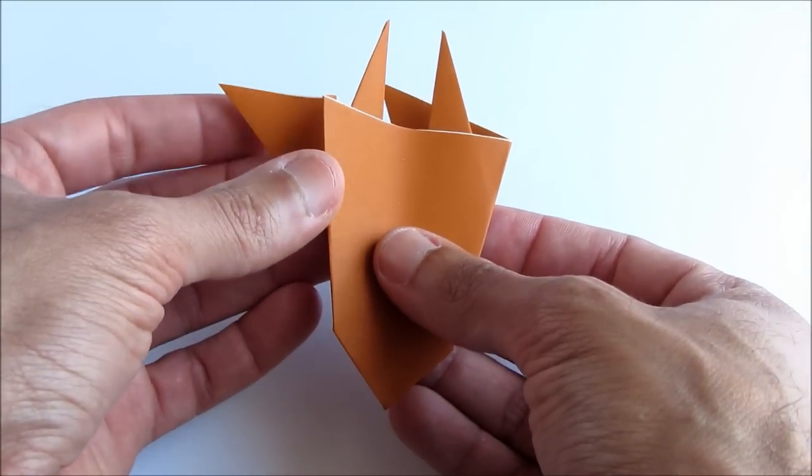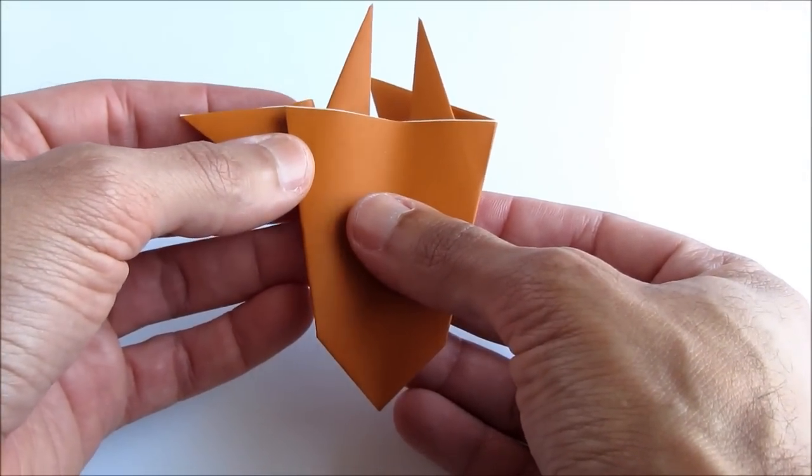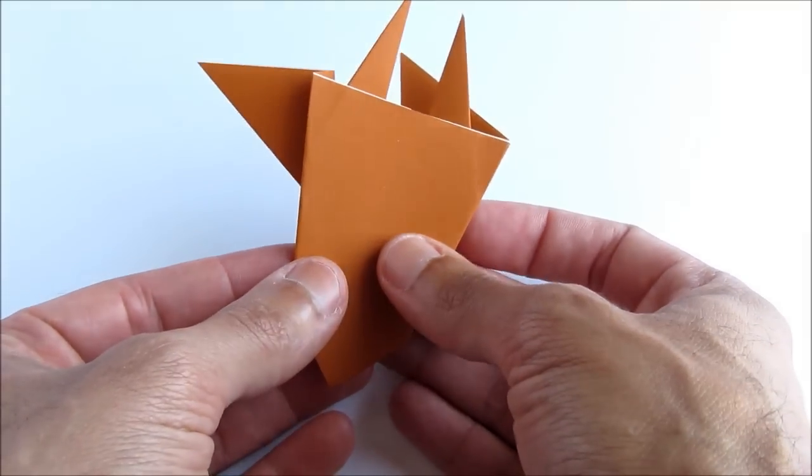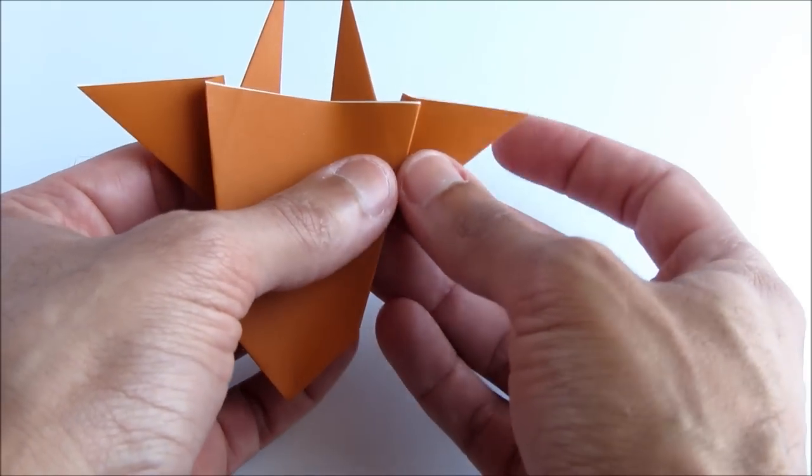Next do a valley fold to form the left ear of the bull. And repeat that on the right side.